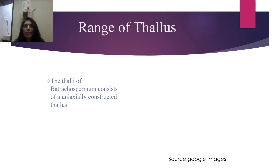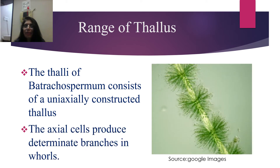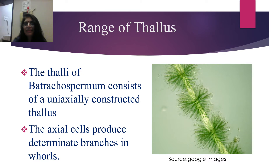Still continuing with the range of thallus — now we have the freshwater form, Batrachospermum. You can see the thallus is altogether different. The thallus of Batrachospermum consists of a uniaxially constructed thallus, as you can see in the diagram. It is uniaxial — you can say the mother axis or main axis. The axial cells produce determinate branches in whorls. These whorls are the laterals. There are two types of laterals: laterals of unlimited growth and laterals of limited growth, so these are of determinate size.